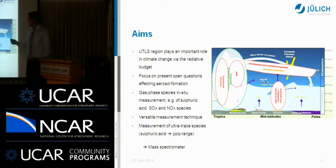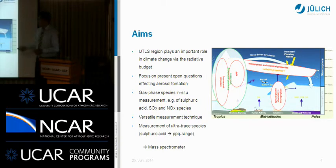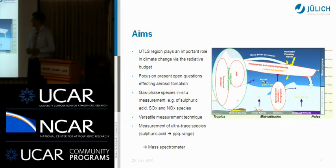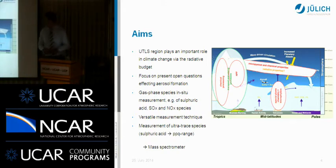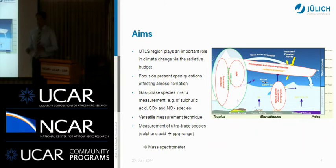Our aim is to measure in the UTLS region. You have transport processes from different sources up into the stratosphere, mainly in the tropics or by volcanoes, which bring interesting species up into the stratosphere where they make chemistry and aerosols are produced. This chemistry is interesting for us, and we like to measure it with our instrument. We want to build a versatile and very sensitive instrument to measure in the ultratrace range. The interesting species for us are mainly sulfuric compounds like sulfuric acid and NOx species, which are the main aerosol components.